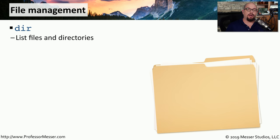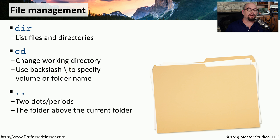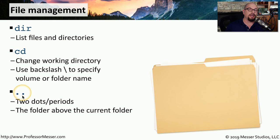When working at the command prompt, you may want to list all the files in your current directory using the 'dir' command. You can also move between directories using the 'cd' command — change working directory. You can combine this with the backslash to specify a volume or series of subdirectories to move to. If you're currently in a working directory and want to move to the directory just above it, you can use two dots (..) to specify the folder above the current working folder.